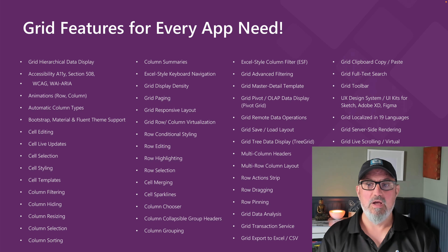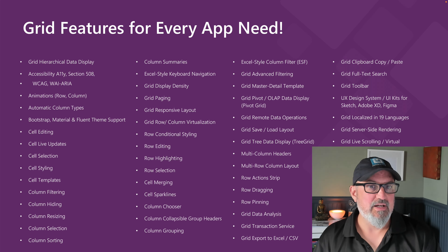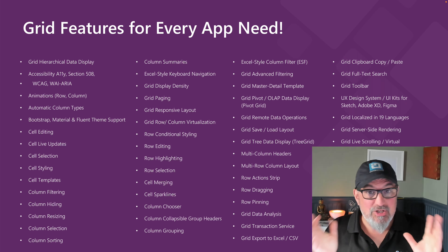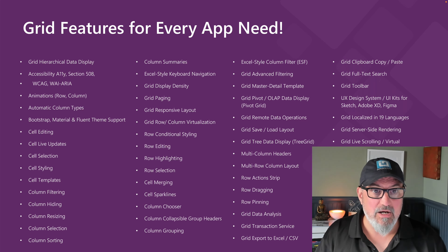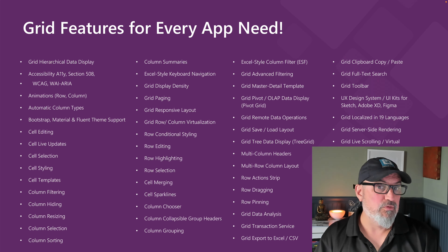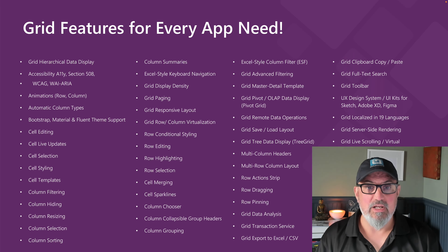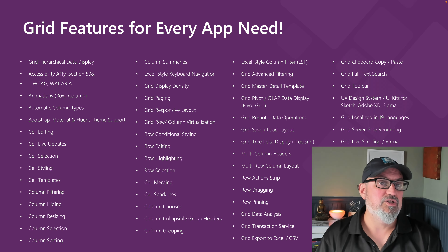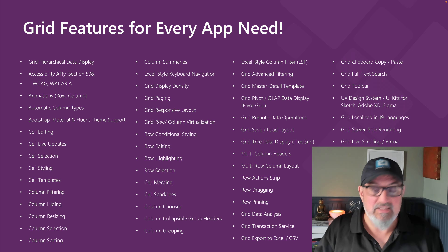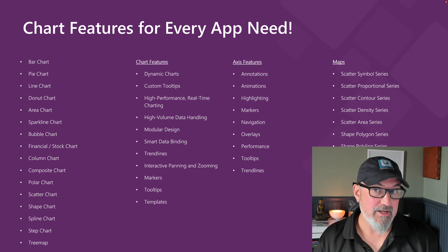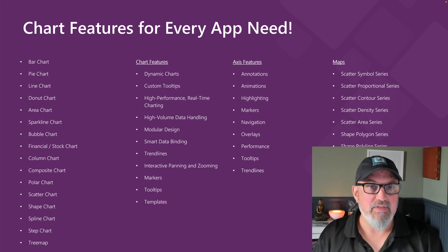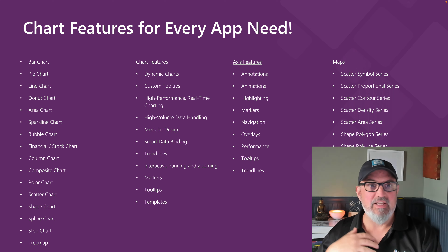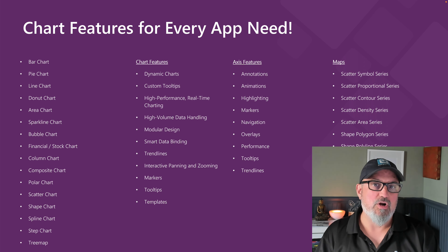Infragistics and Ignite UI is the place to be for grids — everything you can imagine is in this grid. Our development process is public at github.com/igniteui — add feature requests or check the roadmap. For charts, our chart is highly extensible. We have two core charts: the data chart, which is the beast with every feature and extensibility you'd need, and the category chart, a subset for category axis-based charts.